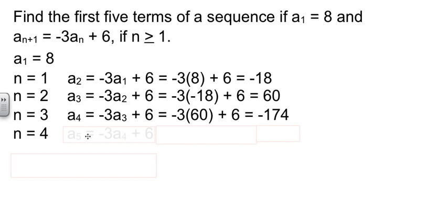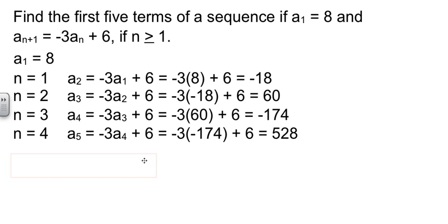If we use n equals 4, then we can find a₅. Plug in what we know. Do a little arithmetic. Now we have the first five terms of this sequence.